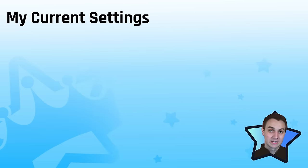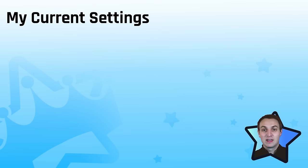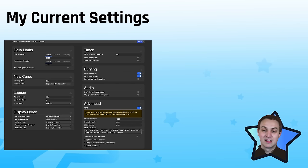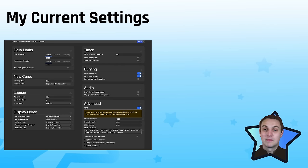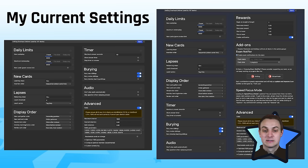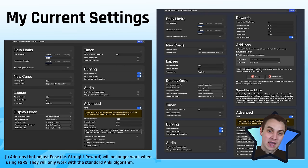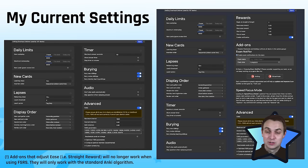These are my current settings — please do not copy them. The key takeaway from this video is that you should individualize your settings. Without add-ons, I use FSRS with a max interval of five years and a learning step of 15 minutes for my medicine decks. With add-ons, I've got the exam notifier add-on and the straight reward add-on installed — straight reward still calculates ease in case I want to switch back to SuperMemo 2 at some point — though to be honest it's really not useful anymore with FSRS.